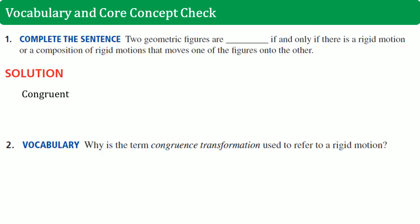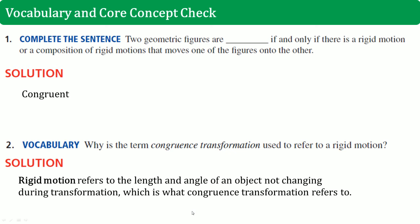Question two, vocabulary. Why is the term congruent transformation used to refer to a rigid motion? And the answer for that is a rigid motion refers to when the length and the angle of the object does not change during the transformation, which is the same thing as what a congruent transformation refers to.